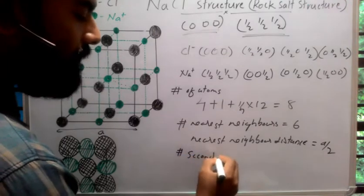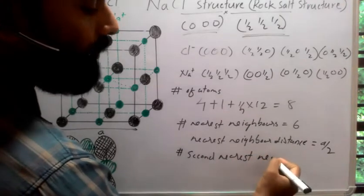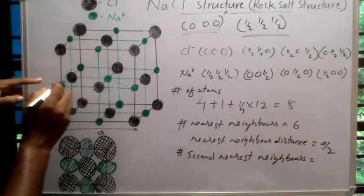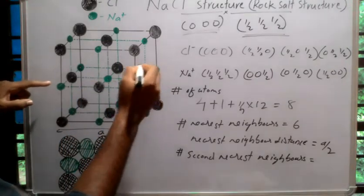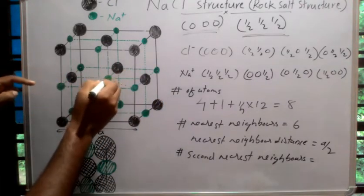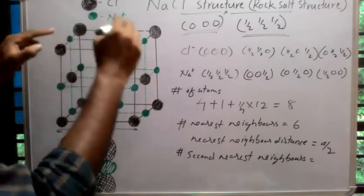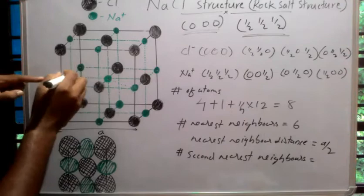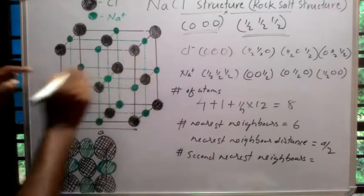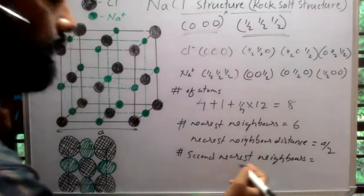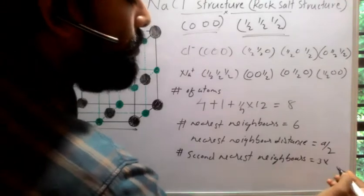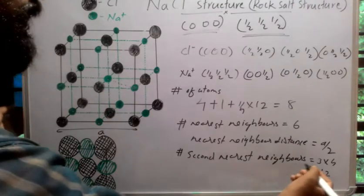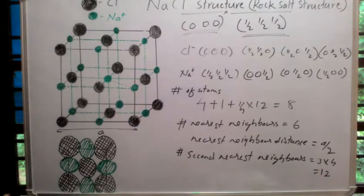Now, the number of second nearest neighbors: the second nearest neighbors are atoms attached to the corners of the planes which cut through the central atom. There are three such planes total. Each plane has four atoms at its corners. So the number of second nearest neighbors is equal to 3 × 4 = 12.